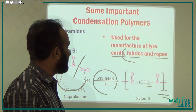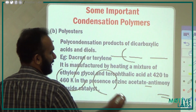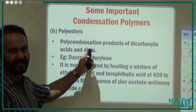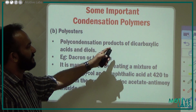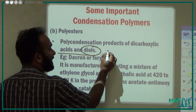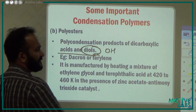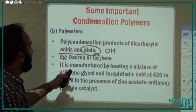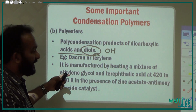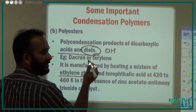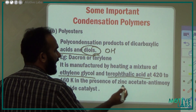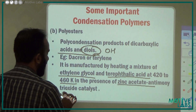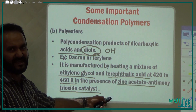Next we have polyesters. An example is Dacron and Terylene. These are poly-condensation products of dicarboxylic acid and diols — diols have two alcohol groups, and dicarboxylic acid has two COH groups. They are manufactured by heating a mixture of ethylene glycol and terephthalic acid at 420 to 460 Kelvin temperature.